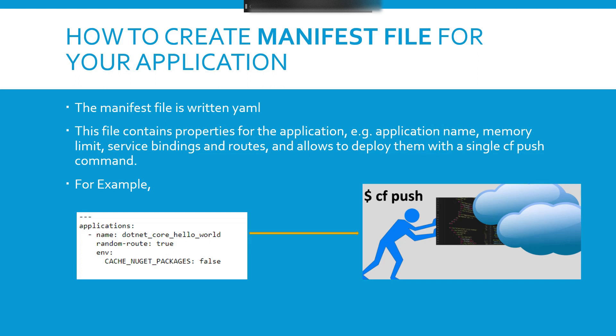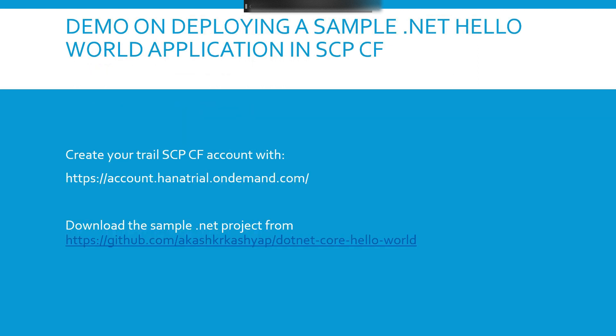Once your manifest is created, the only thing you have to do is run CF push, and CF push will deploy your application using this manifest file to Cloud Foundry. That is the use of the manifest file. Now we'll have a demo on deploying a sample dotnet Hello World application in SAP Cloud Platform.